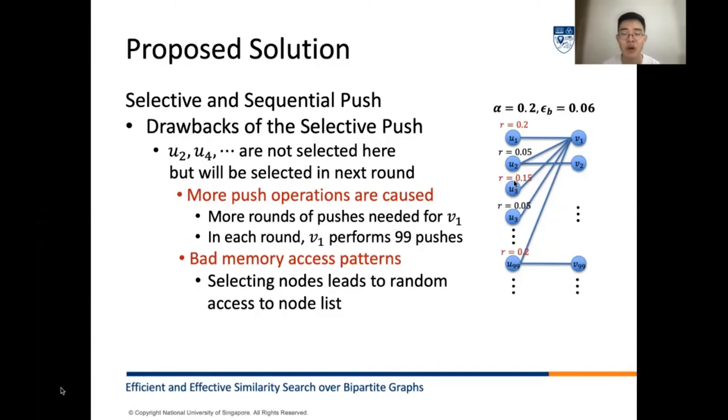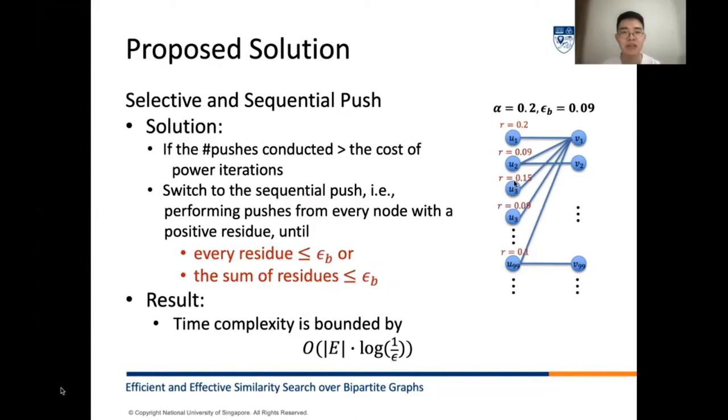An extreme case is that if in each round, only one node in U1 to U99 is selected to push. Since each round, V1 will push all residual back to 99 neighbors, then we need 99 squared push operations for node V1. Instead, if we let them in a single round, all nodes from U1 to U99 push residuals to V1, then we can deplete more residual but only 99 push operations from V1 are needed. This means selective push will cause more push operations in some cases. In addition, selective push accesses nodes in a random order leading to intensive memory access patterns. All these drawbacks in the selective push result in poor performance in the cases when epsilon_b is small or nodes have high average degrees.